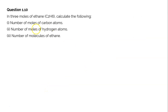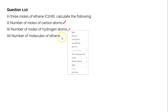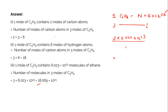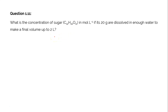So here we have calculated all three parts: number of moles of carbon atoms, number of moles of hydrogen atoms, and number of molecules of ethane. This is all about this video. We will be continuing with question number 1.11 in our next video. In case you have any doubts or want more such videos, please let me know in the comment section. Until then, bye everyone.